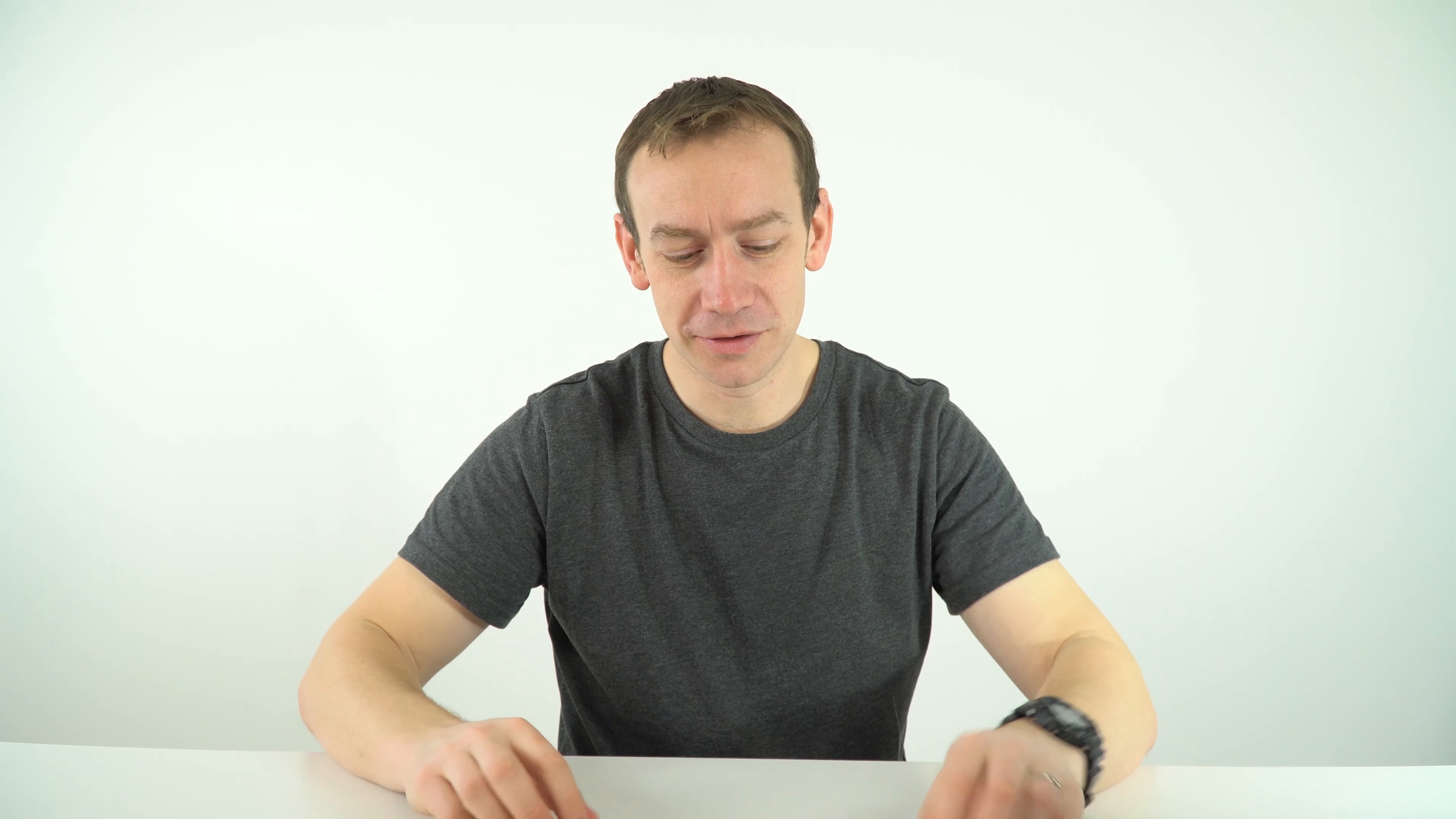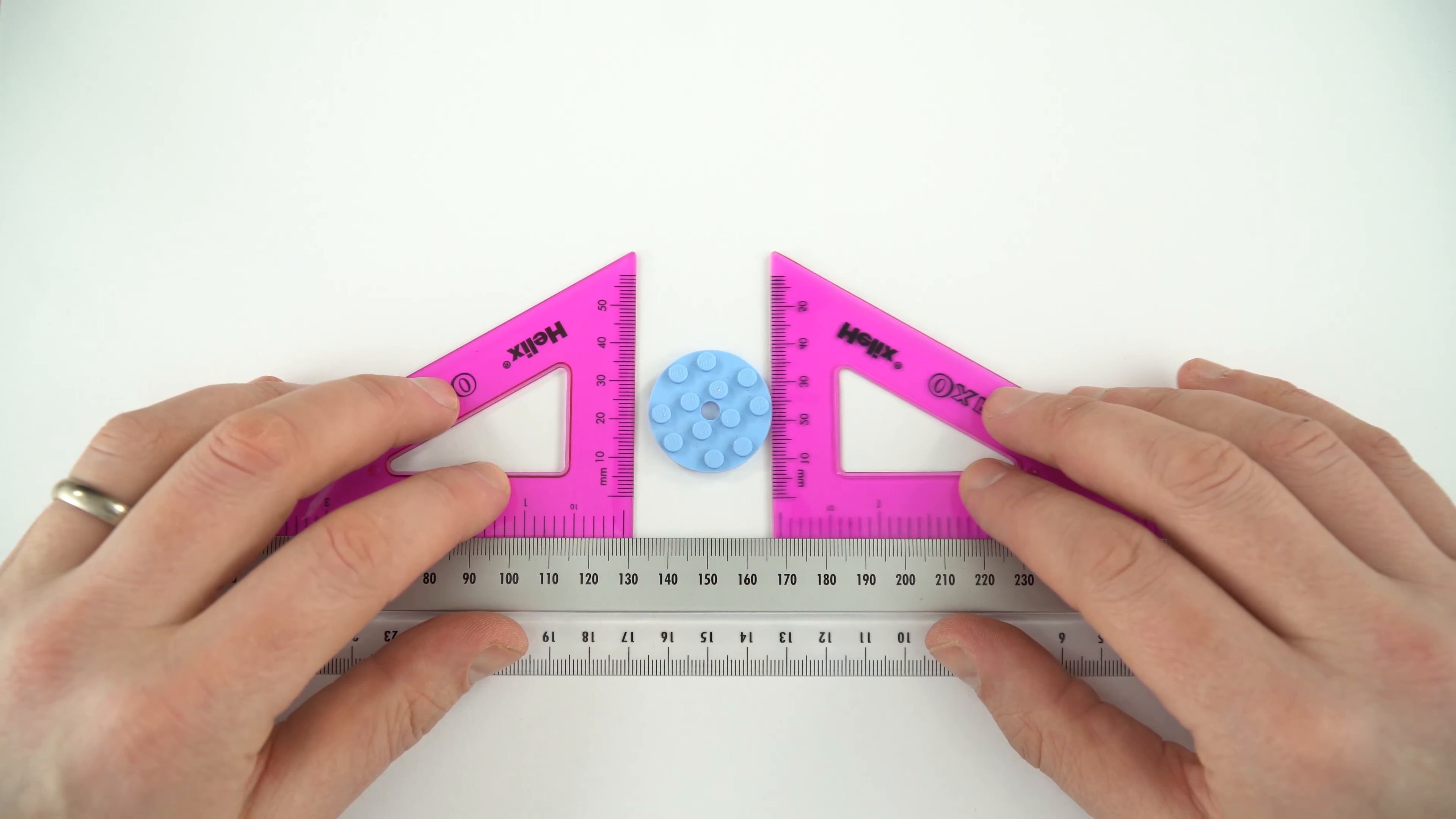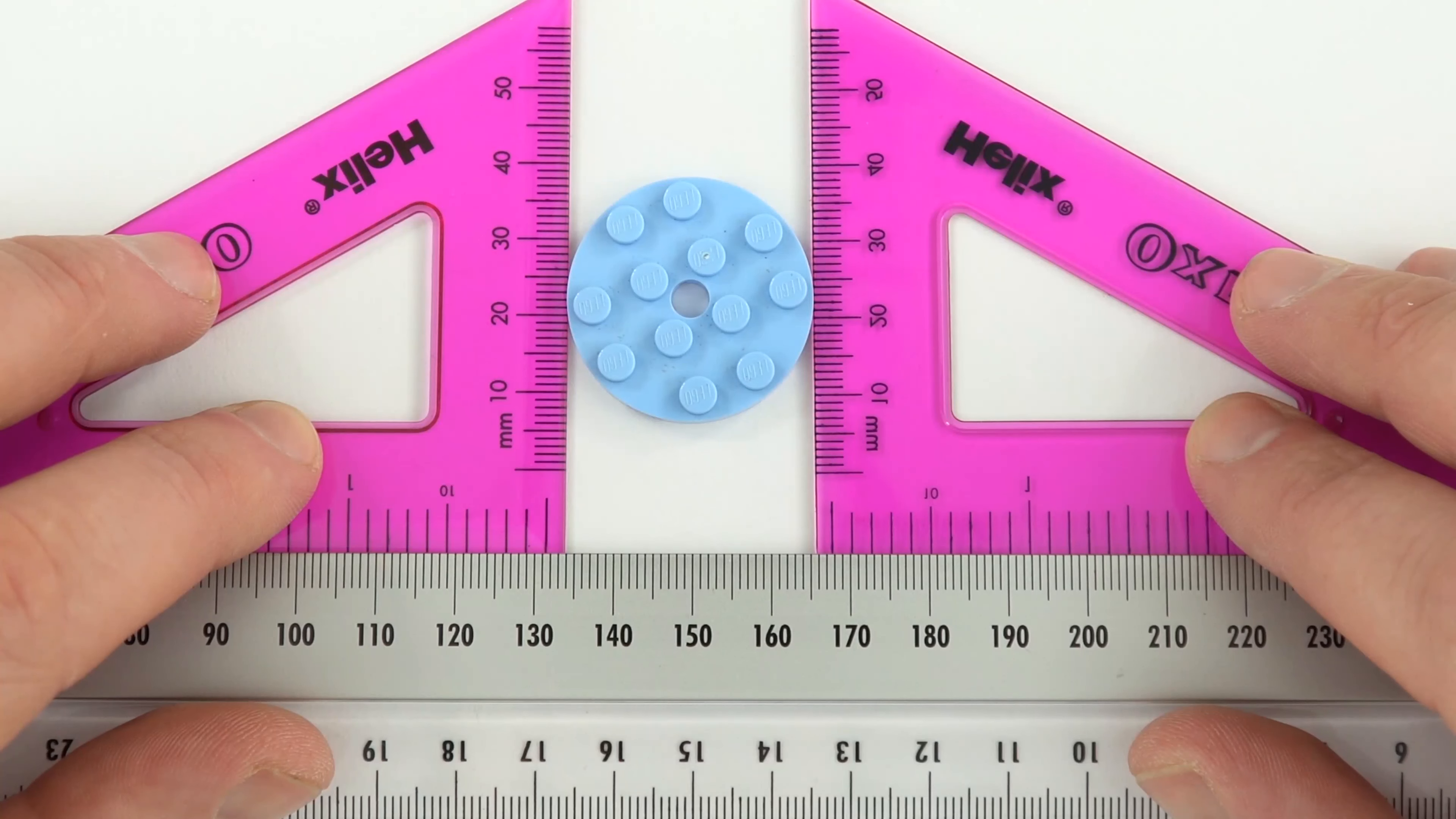But probably more importantly, you can use two of them together to measure the diameter of round objects. If you put the two set squares on a ruler on each side of the object, you can then take measurements for the start and the end and then work out the diameter.